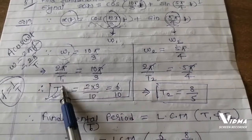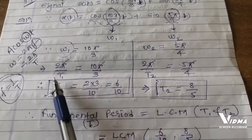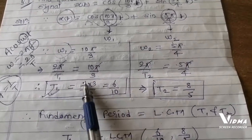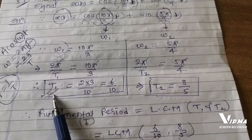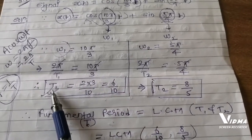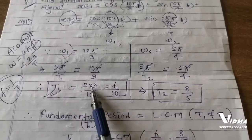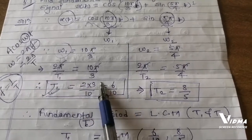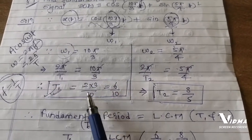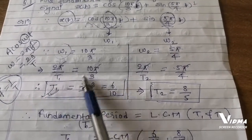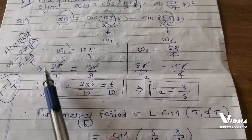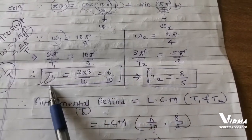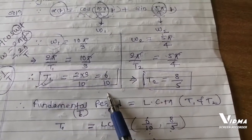Using the formula omega = 2π/T, we write 2π/T₁ = 10π/3. Simplifying by cross multiplication, we obtain T₁ = 6/10.